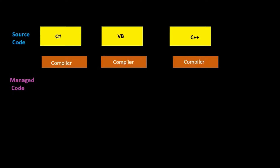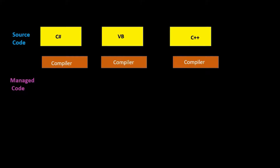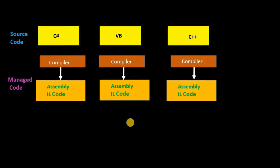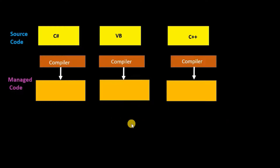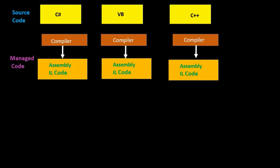Then that compiled code is called IL code — that is Intermediate Language code — or MSIL code, that is Microsoft Intermediate Language code. We can also refer to this as Assembly IL code. However, we cannot directly execute this Assembly IL code on the operating system, because this code is only partially compiled at this stage.